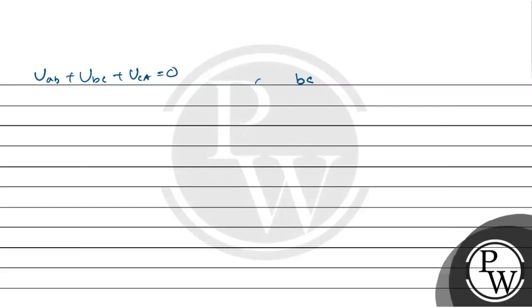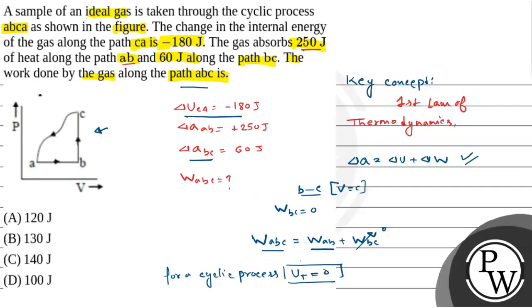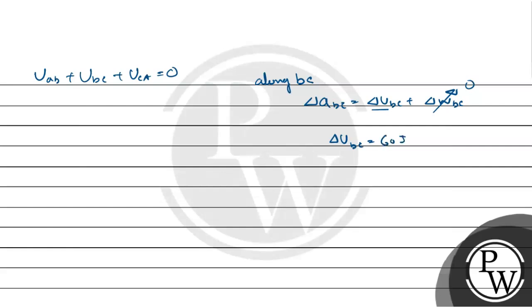Now, along path BC, del Q_BC equals del U_BC plus del W_BC. Now, along BC, work done is 0, so del U_BC is simply del Q_BC. So, the internal energy at BC is del Q_BC, that is 60 joule. Now, we put these values. So, U_AB plus U_BC, that is 60, plus U_CA, that is minus 180, equals 0. So, del U_AB is equal to 120 joule.